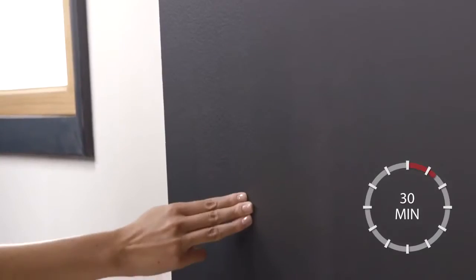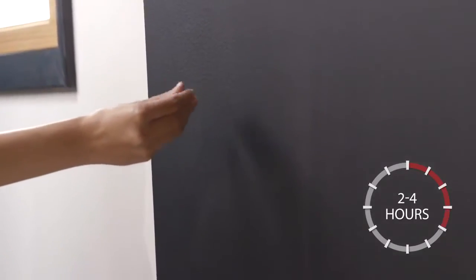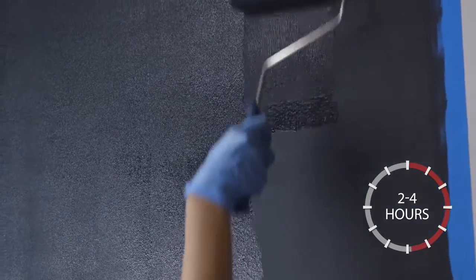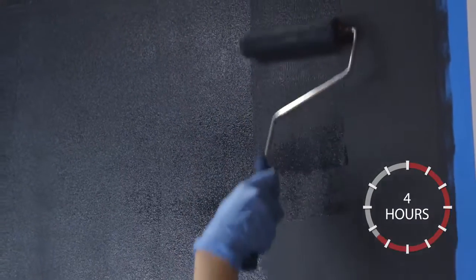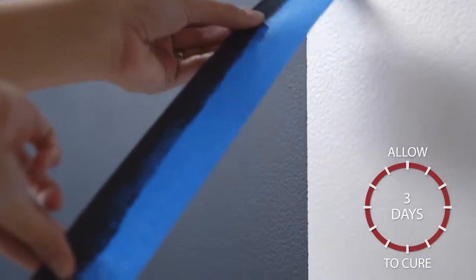Chalkboard paint should be dry to the touch in 30 minutes and dry in two to four hours. If you decide to add another coat, wait at least four hours between coats. Dry time may increase in cooler temperatures. Allow the finish to cure for at least three days.